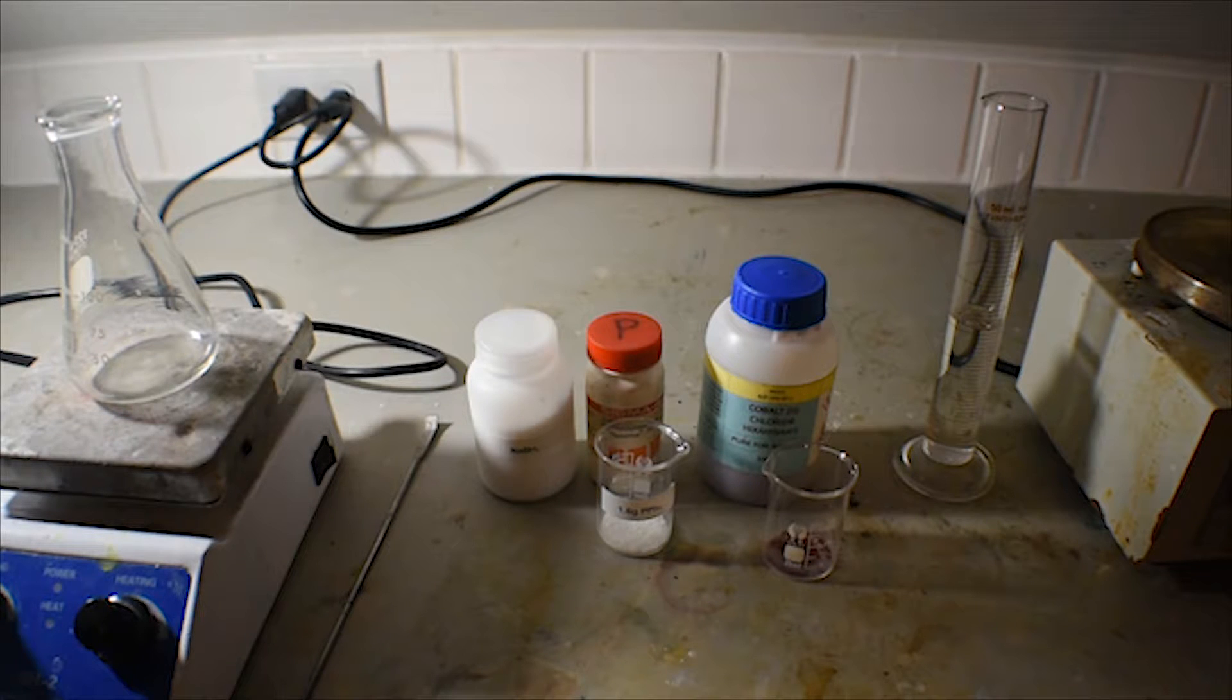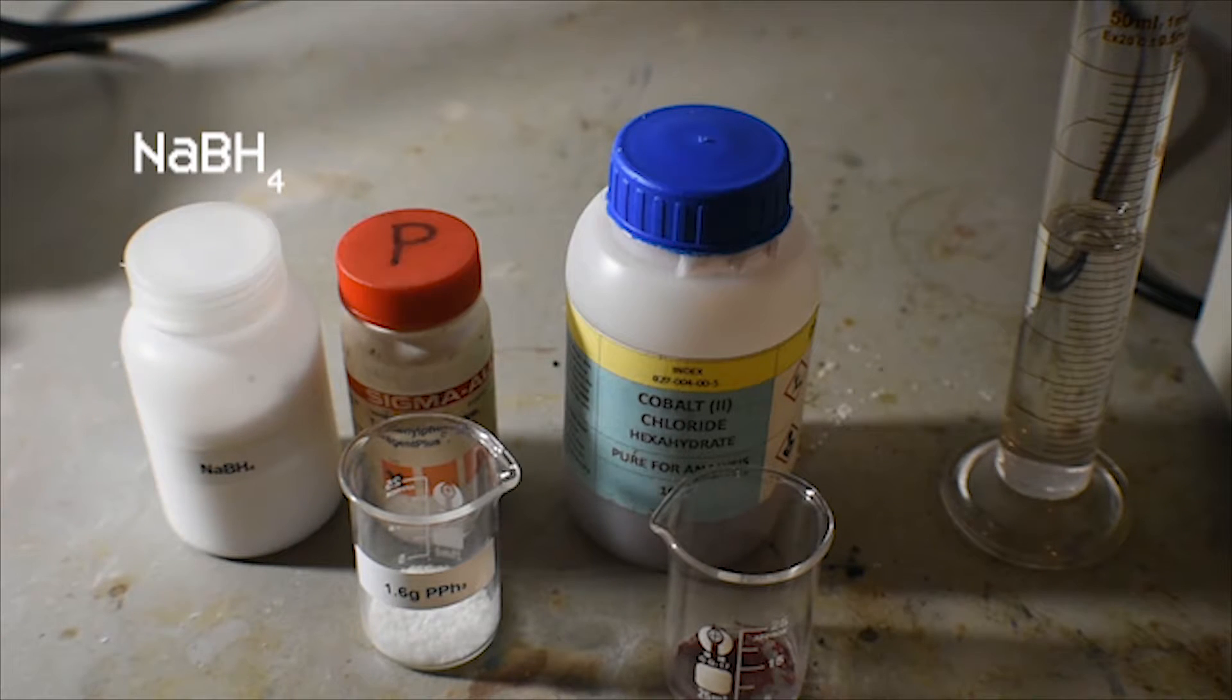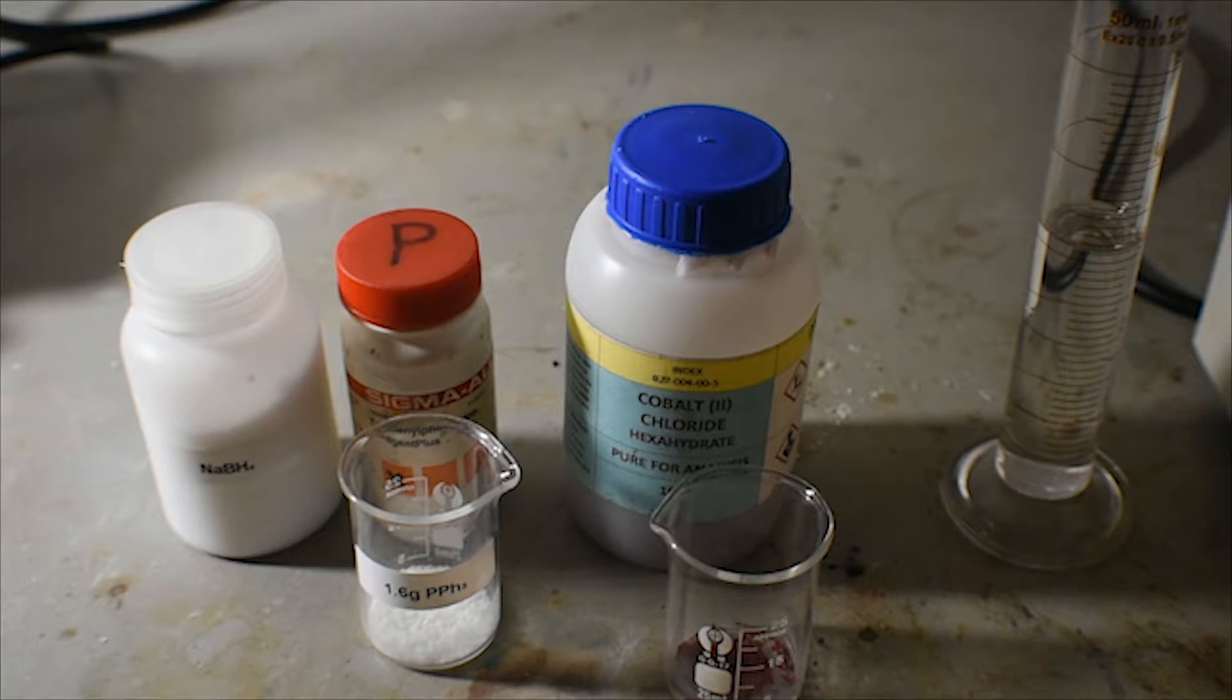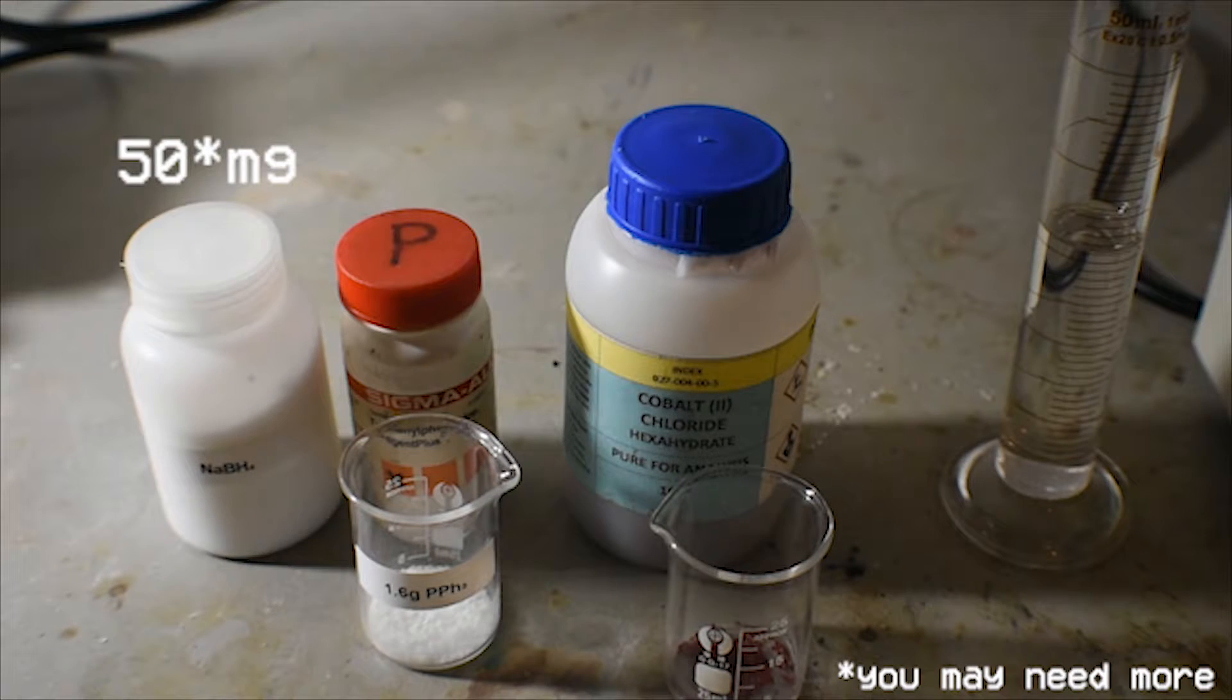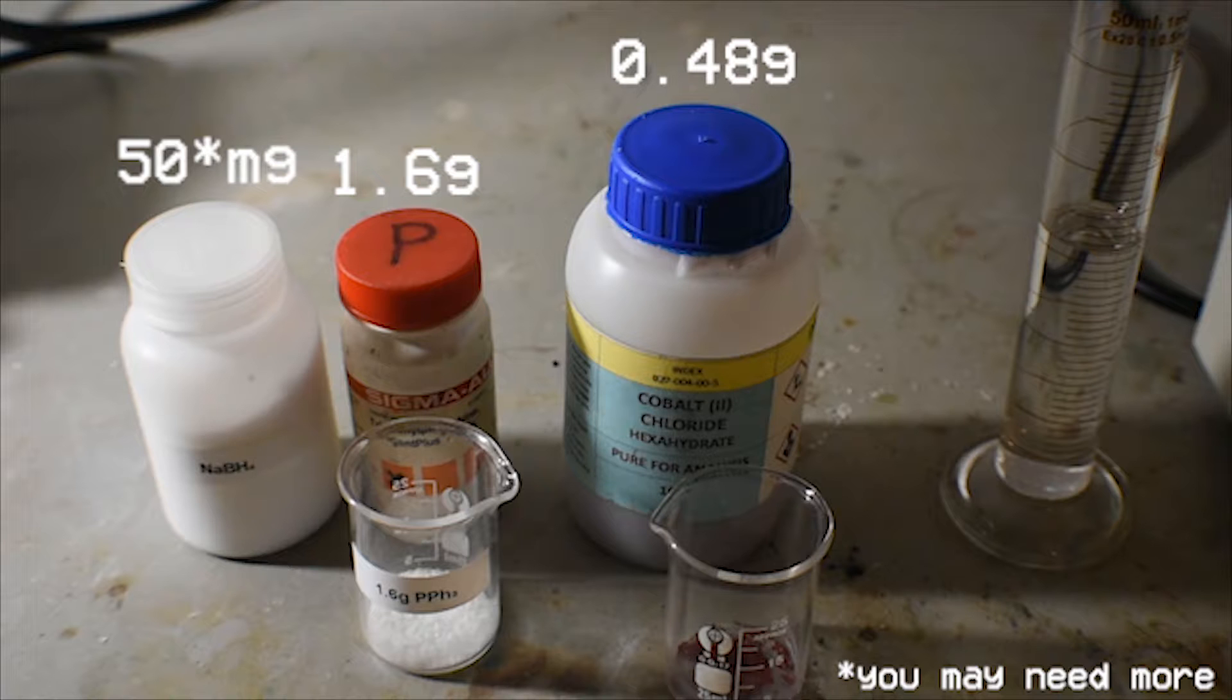This synthesis is fairly simple, and only requires a few ingredients. The main reactants are sodium borohydride on the left, triphenylphosphine, and cobalt-2 chloride hexahydrate. The amounts that we will need for this are 50 milligrams of sodium borohydride. However, if you need to use more, that won't affect the reaction in any negative way. For triphenylphosphine, we will need 1.6 grams. And finally, for the cobalt-2 chloride hexahydrate, 0.48 grams of the solid will be needed.